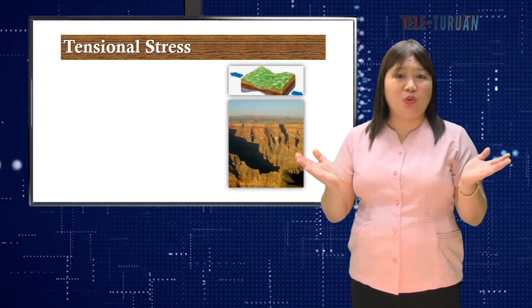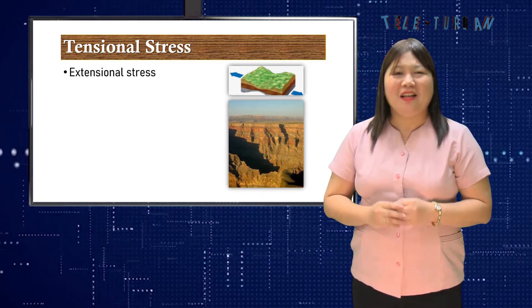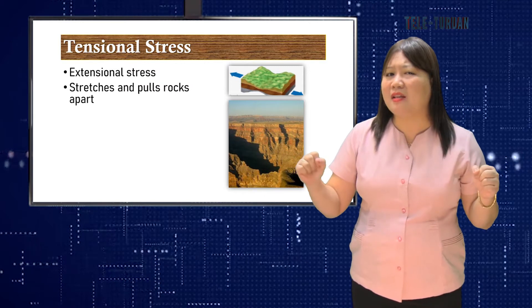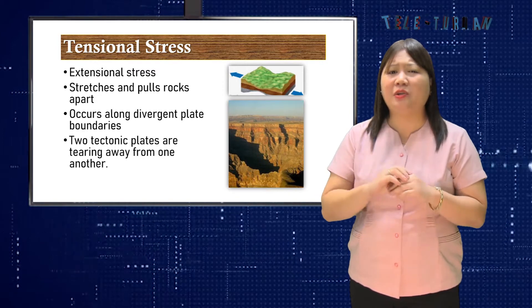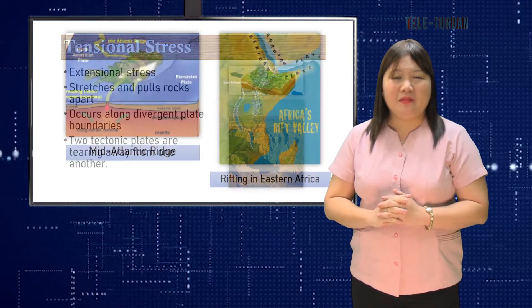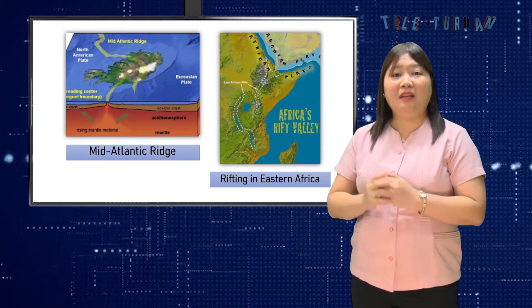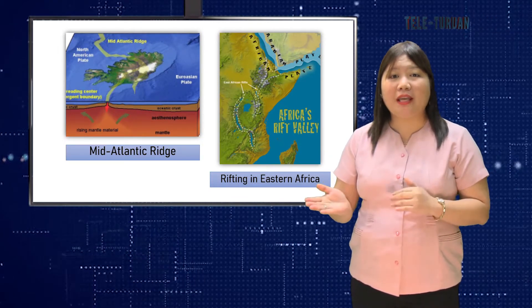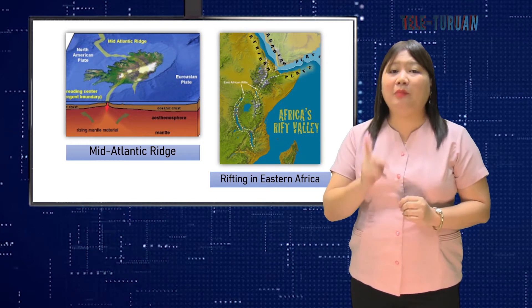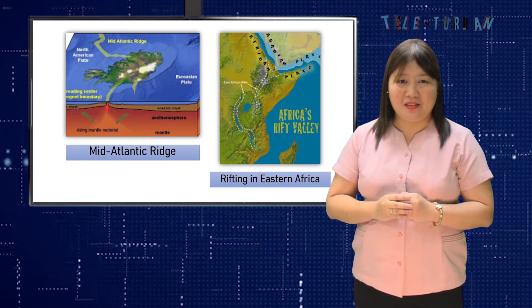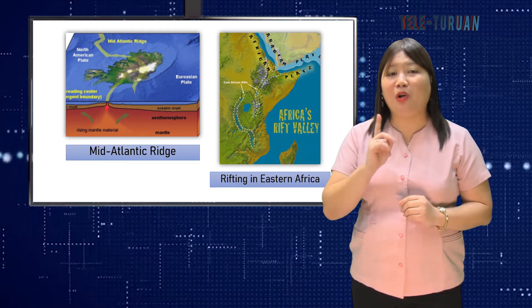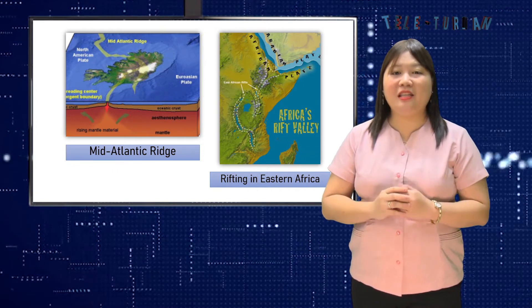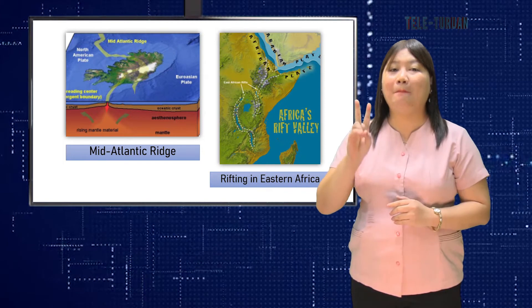Opposite to compressional is tensional stress, sometimes known as extensional stress. Tensional stress stretches and pulls rocks apart, and occurs along divergent plate boundaries where two tectonic plates are tearing away from one another. An example is the Mid-Atlantic Ridge where the plates carrying North and South America are moving west while the plates carrying Africa and Eurasia are moving east. Another example of tensional stress is rifting occurring in parts of Eastern Africa — a process when an existing plate begins to split itself into two pieces.